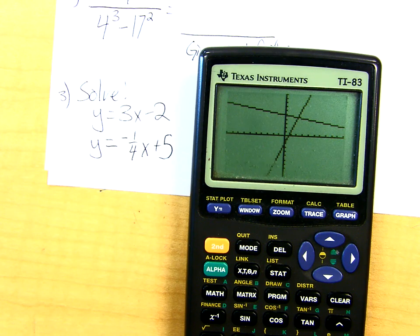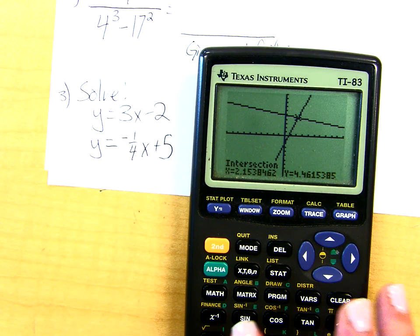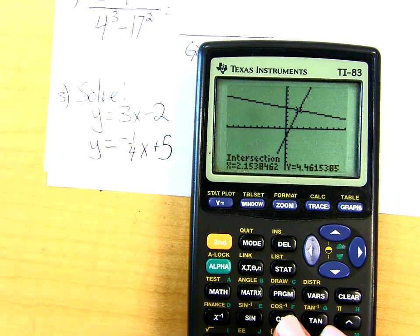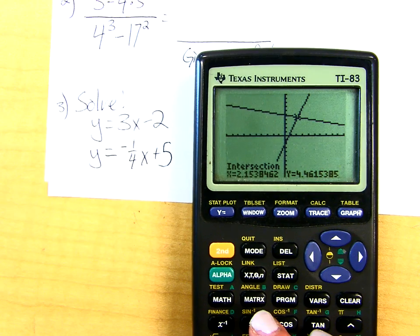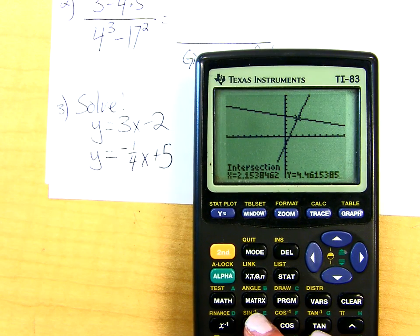Now, I'll just ask you these questions. You don't even care. You just hit enter, enter, enter, and then there is your intersection down below. So 2.15, 4.46, something close to that. How'd you do?